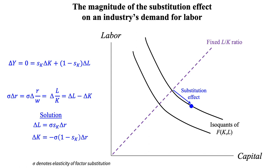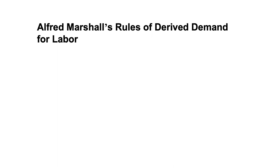This tells us exactly where the blue dot is relative to the original labor-capital ratio — that's the blue arrow. Each of the conditions we started with describes a different part of the geometry. The first condition tells us the direction of the blue arrow — exactly how much it points to the right for each unit that it points down. The second condition tells us the length of the blue arrow; the greater the elasticity of substitution, the further we move along the isoquant. The sum of the two effects gives us the formula capturing Marshall's laws.